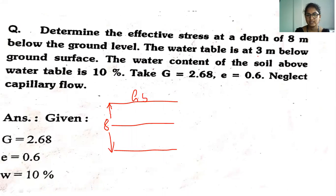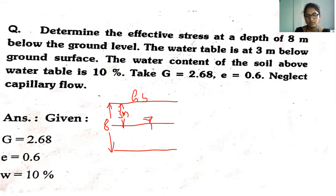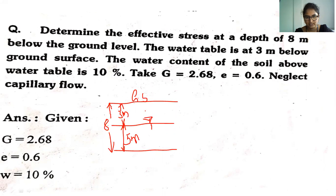The water table is at 3 meters below the ground surface, so the top layer is 3 meters. The remaining part is 8 minus 3, which equals 5 meters. The top layer (above water table) is in dry condition, and the bottom layer (5 meters) is in saturation condition.